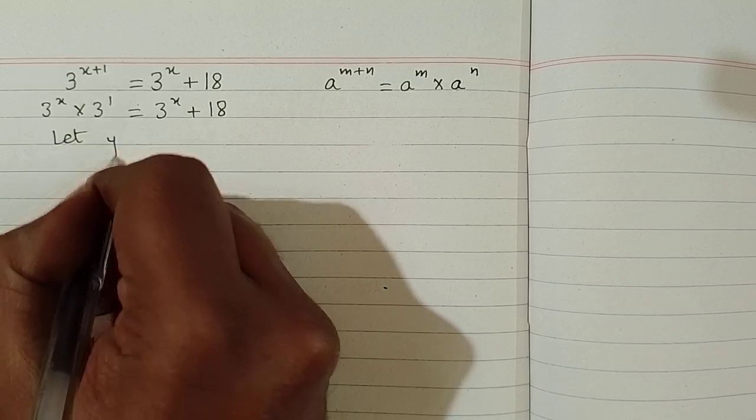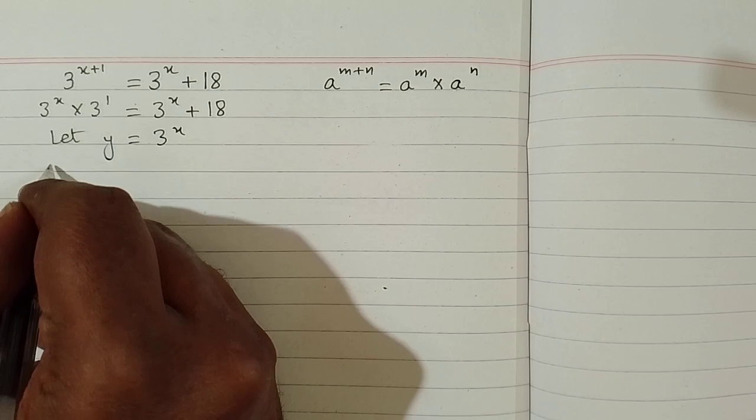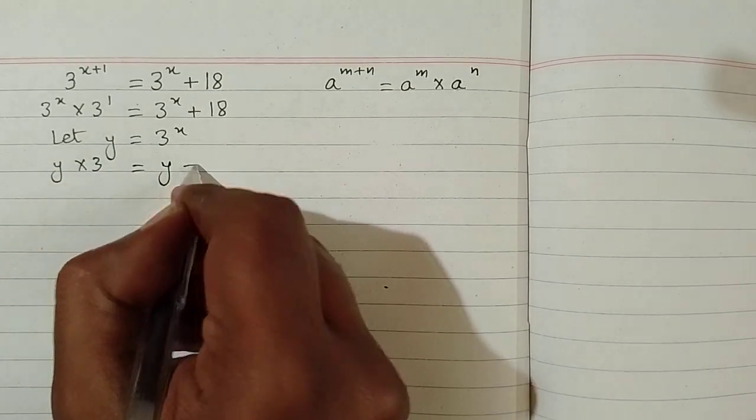Now let y is equal to 3 to the power x so this equation can be written as y multiplied by 3 is equal to y plus 18.